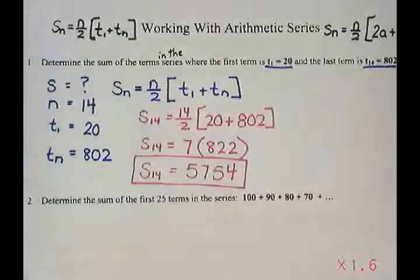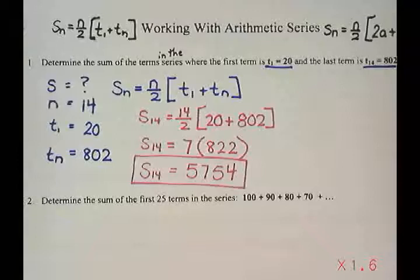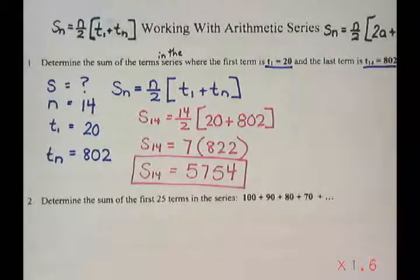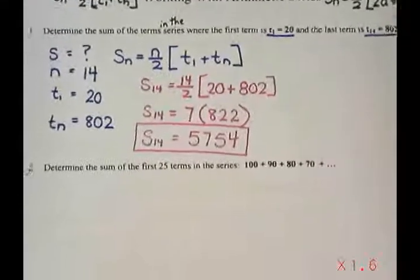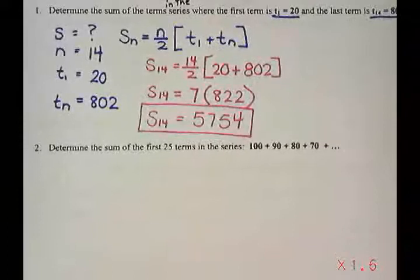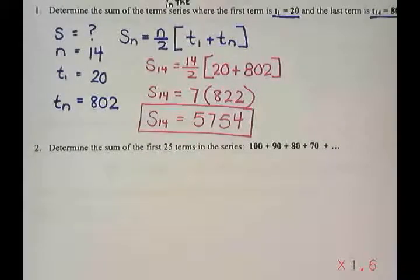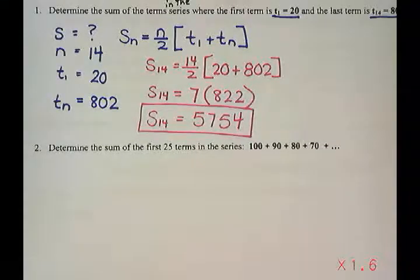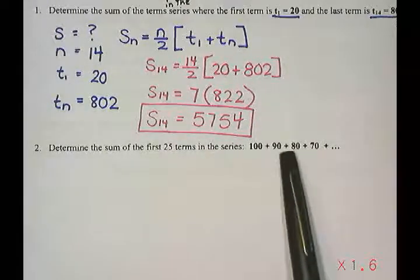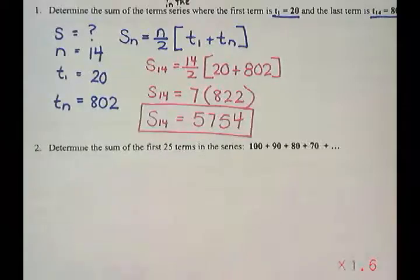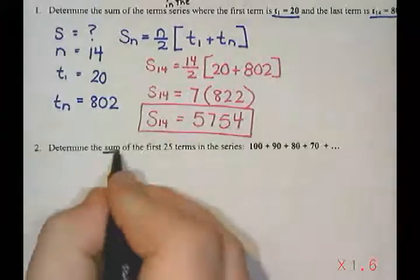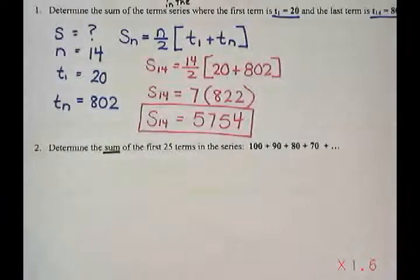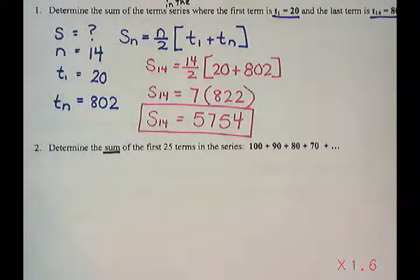Now if I take a look at the second question, this one says determine the sum of the first 25 terms in the series 100 plus 90 plus 80 plus 70. So one of the things that I guess we should talk about is how do you know the difference between a sequence question and a series question. A series question is going to have addition signs instead of commas. And it also mentions the word sum, which tells me that I'm going to be adding together all of my digits.